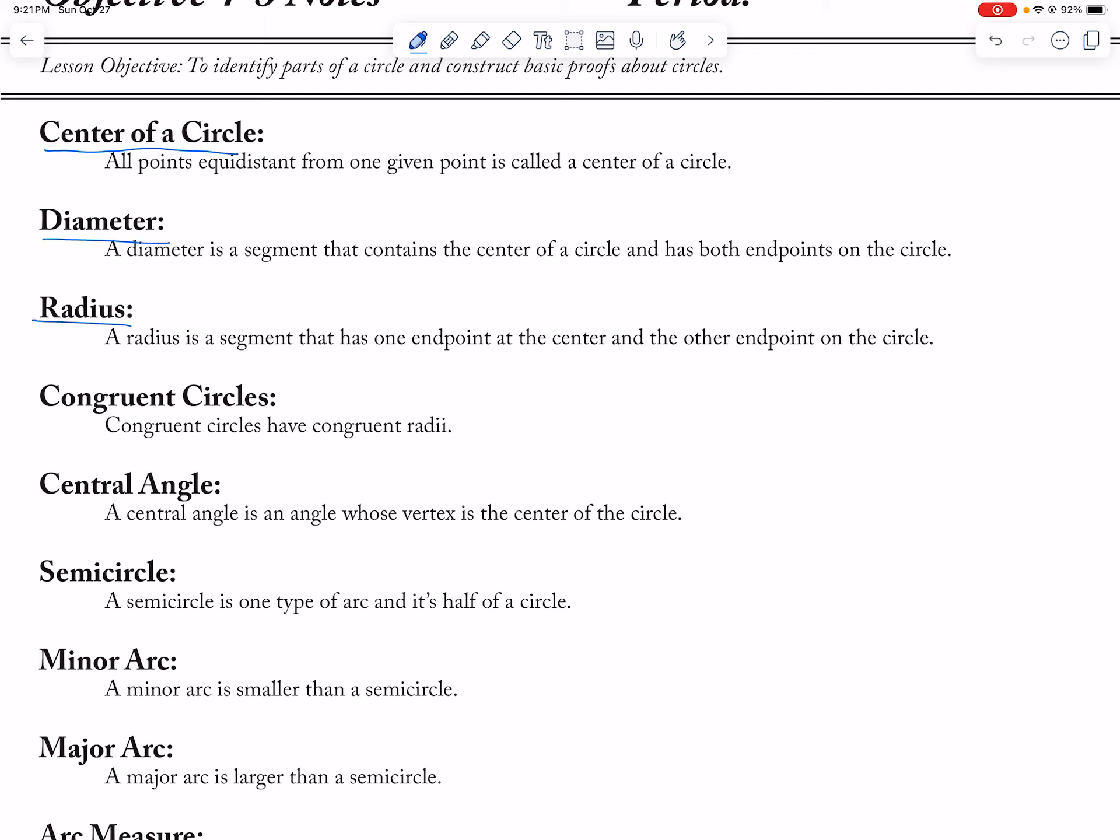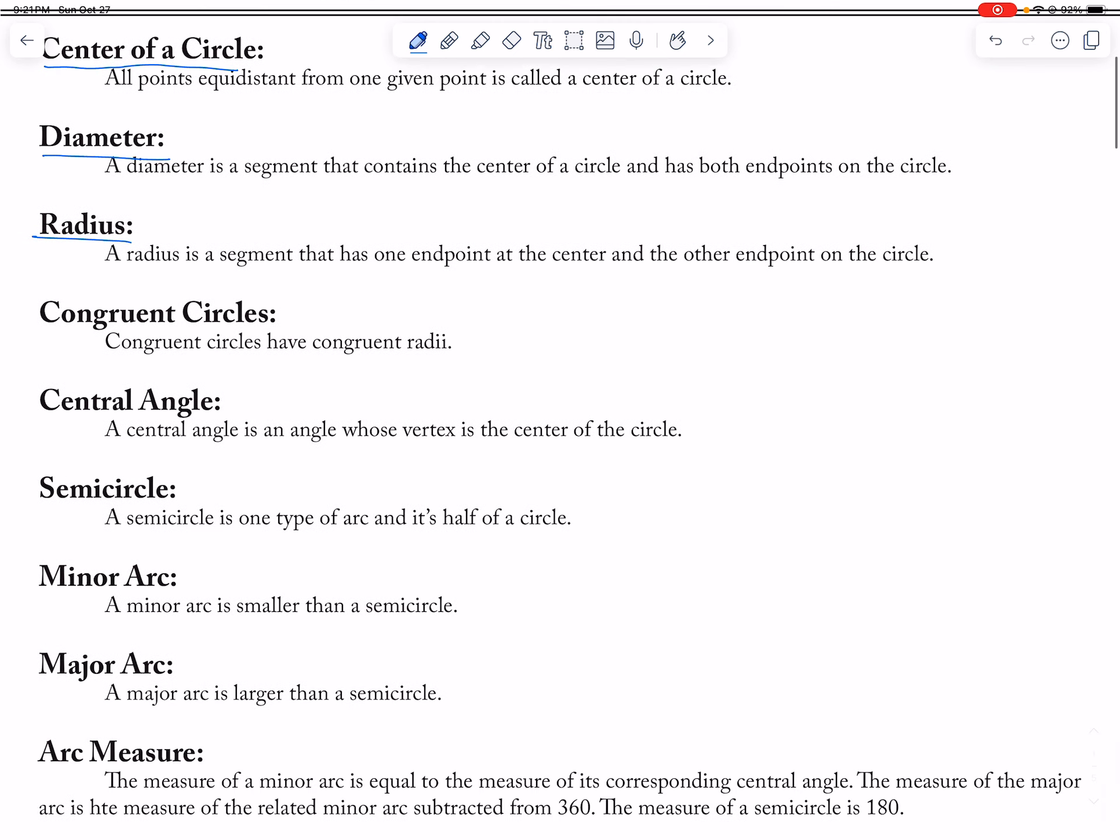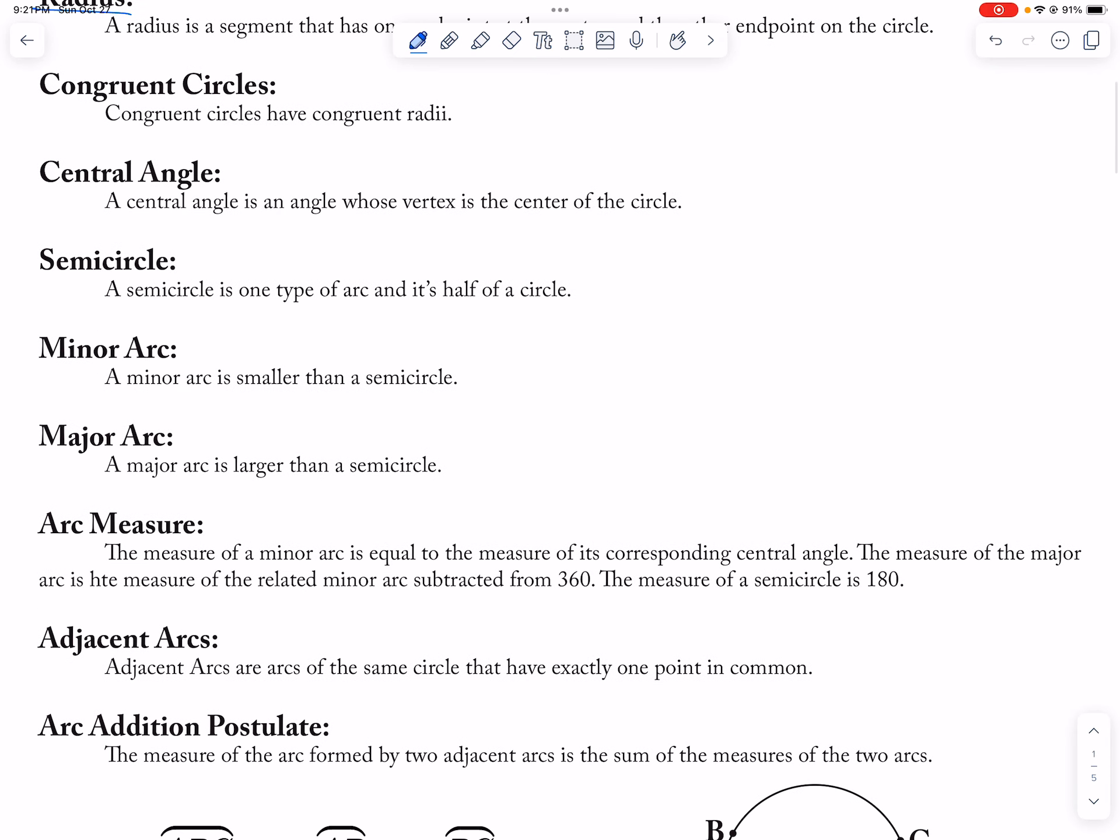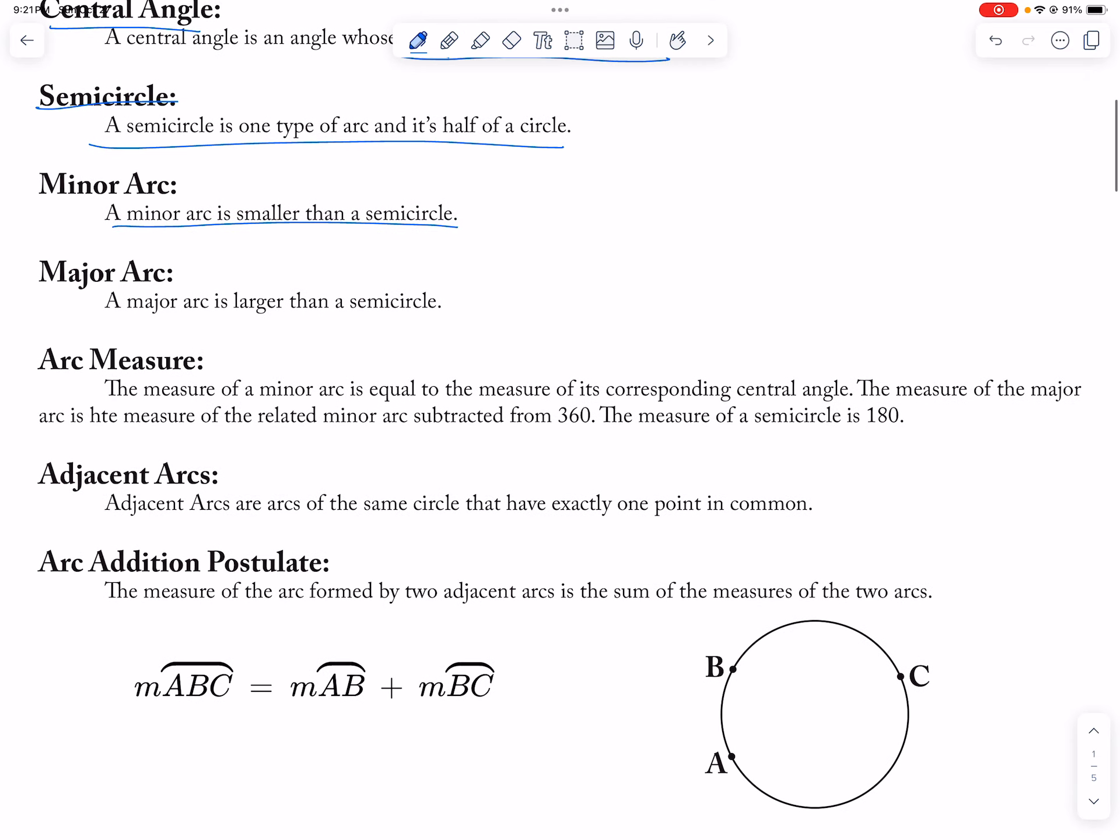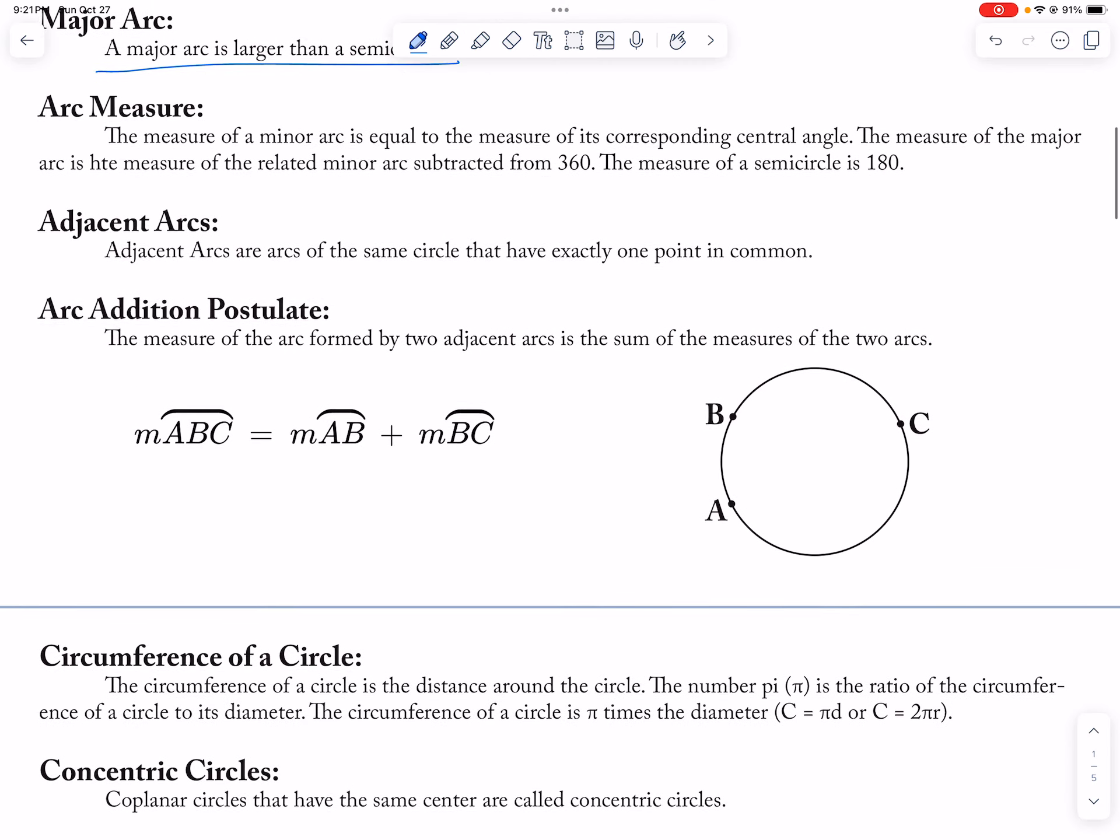Diameter is double the radius, or radius is half of the diameter. Central angle is an angle whose vertex is at the center of the circle. Semi-circle gives you 180 degrees, it's half of a circle. Minor arc is something that's smaller than a semi-circle. Major arc is something bigger than a semi-circle.